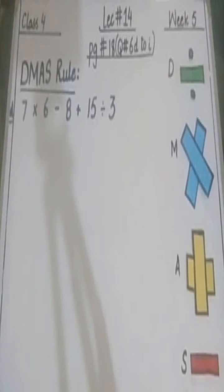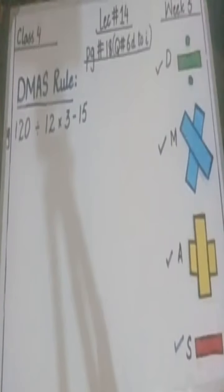So students, we are going to do some more questions on the DMAS rule today. First of all, open your copies, mark date and day on your pages, and draw margin lines on both sides of the page. Okay class, it's page number 15, question number 6. We are going to solve part G now.